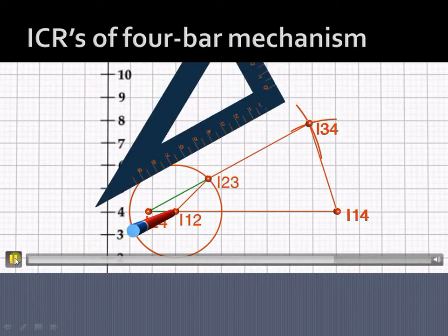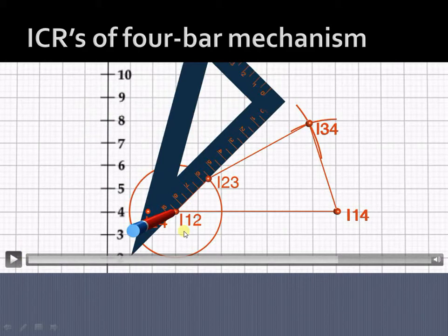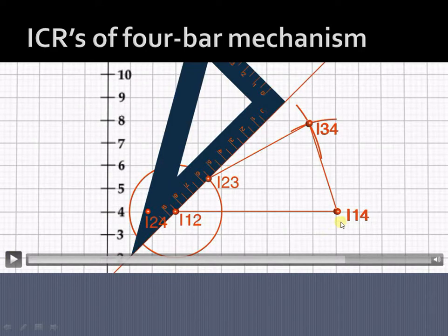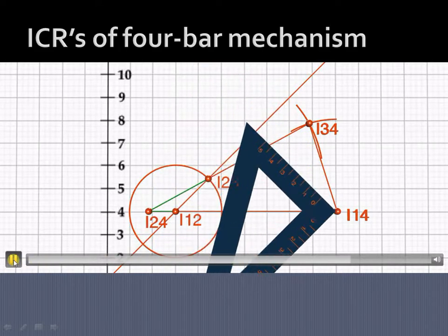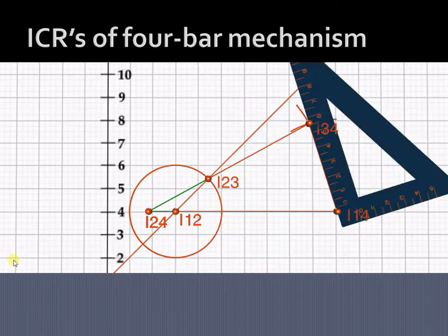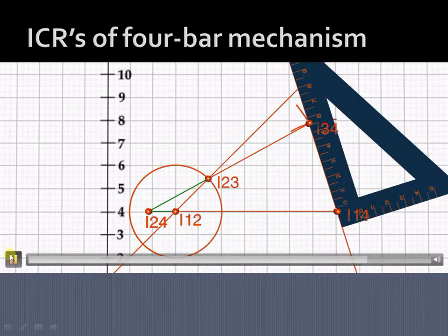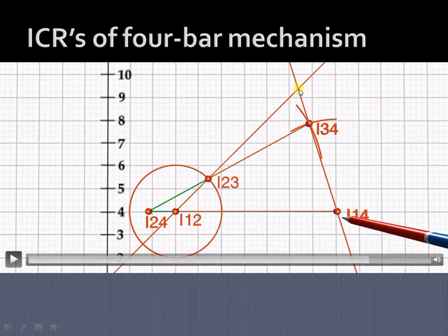Similarly, to locate ICR I₁₃, join the line through I₁₂ and I₂₃ and extend it. Then join and extend the line through I₁₄ and I₃₄. Wherever these two lines meet each other, that is our I₁₃ ICR.